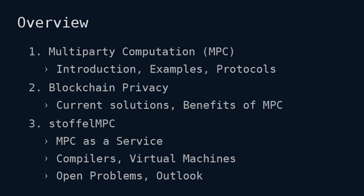So this is the structure of my talk. In the beginning, I'll be talking a little bit about multi-party computation in general. We'll have a look at some introductory examples and also at some protocols. Afterwards, we have a short look at current solutions of privacy on public blockchains, and then we'll see why we probably need some other form of privacy like MPC and what are the benefits. And after that, we'll have a look at our framework Stoffel MPC, which basically allows developers to bring some form of privacy to the blockchain leveraging MPC.